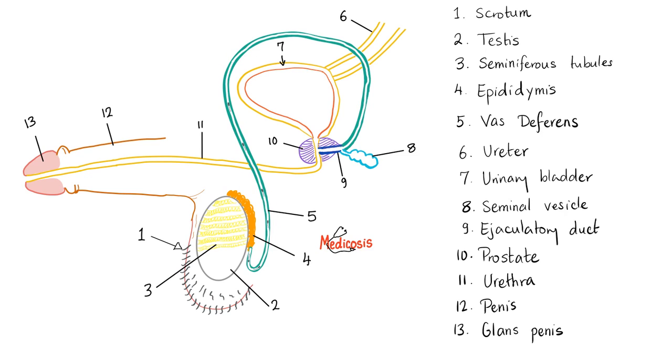Five is the vas deferens. Which literally means the vessel that transport the sperms. Have you noticed the sperm inside the vas deferens? Next. Six is the ureter connecting the kidney to the urinary bladder. So, seven is the urinary bladder. This muscle called the detrusor muscle. Eight is the seminal vesicle. The seminal vesicle duct will join the vas deferens to form a common ejaculatory duct, which is nine, which will open into the urethra.